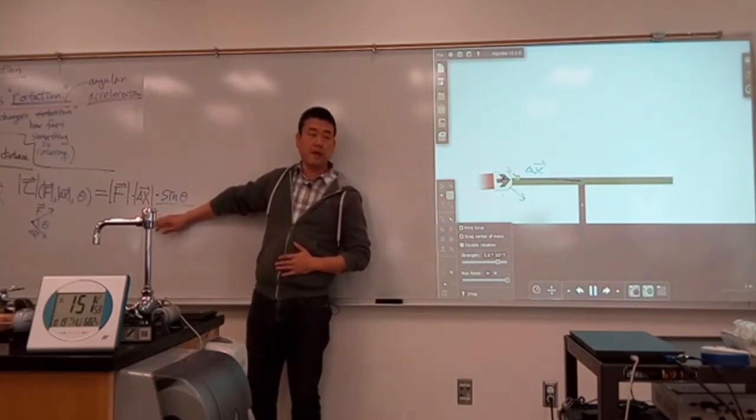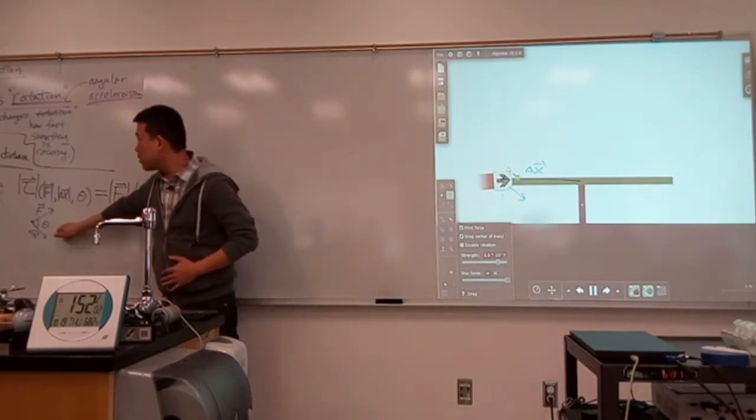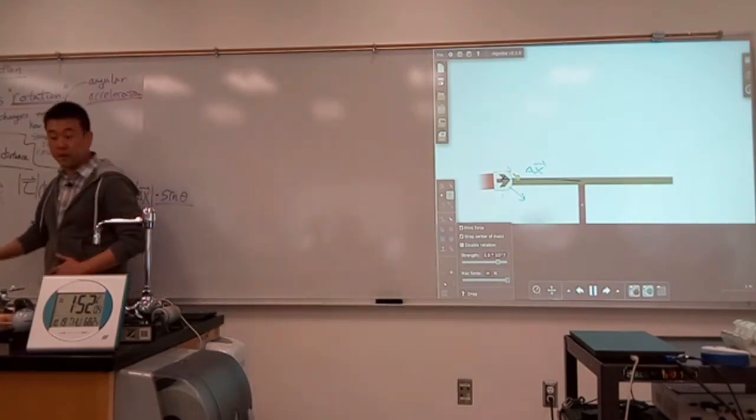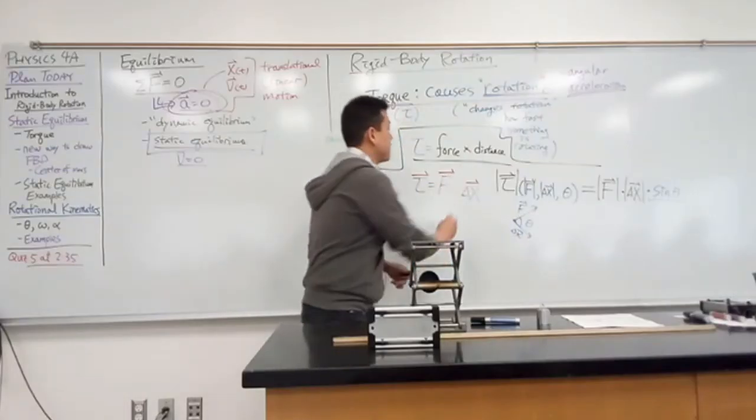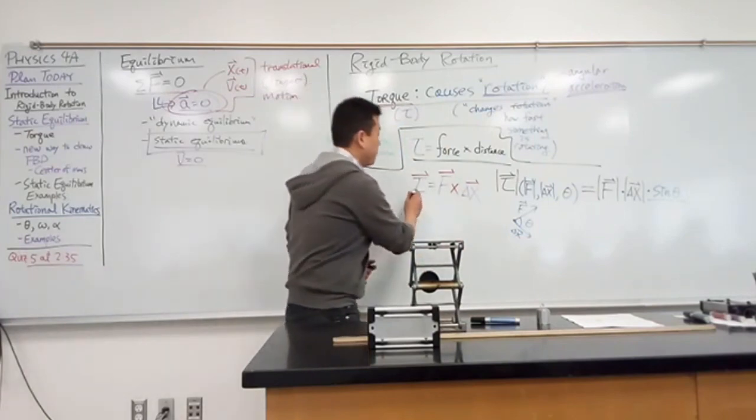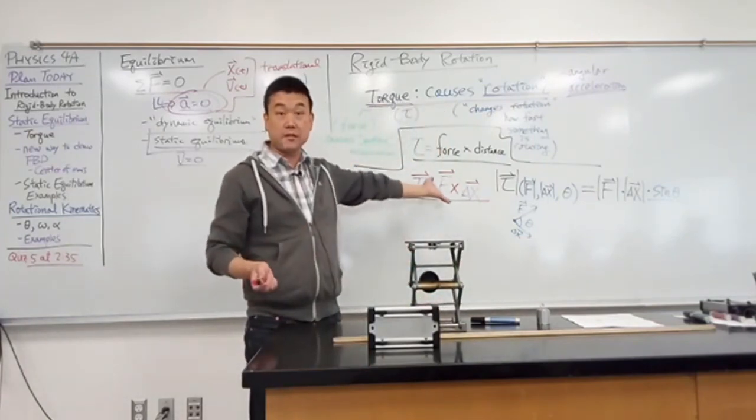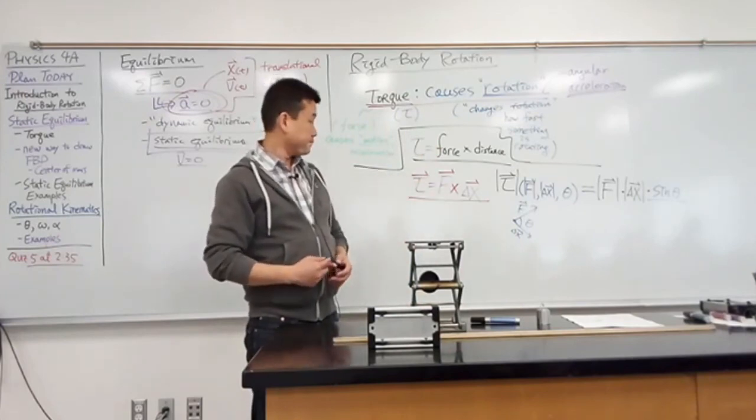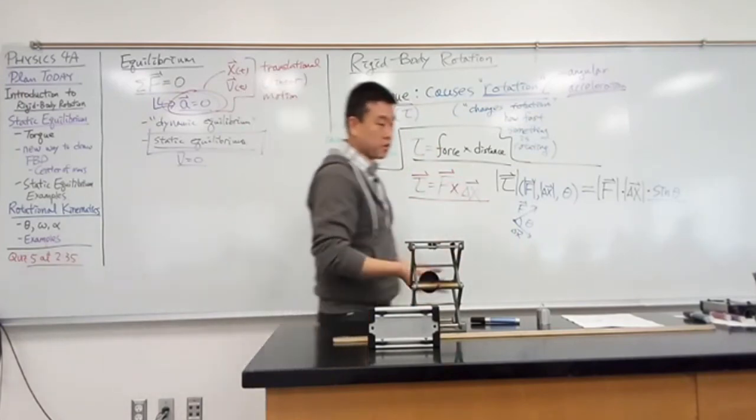We are going to refine this one more time to actually describe what kind of product here is. The symbol we use for the product here is something called cross product, or it's sometimes called vector product. Depending on how far you got in math, you might have seen it already. So this is our long introduction to torque.